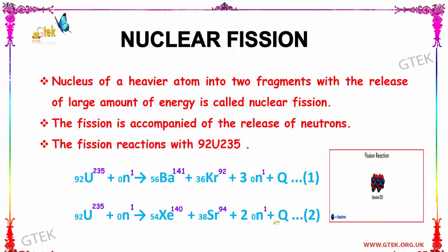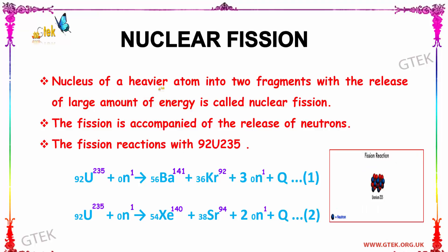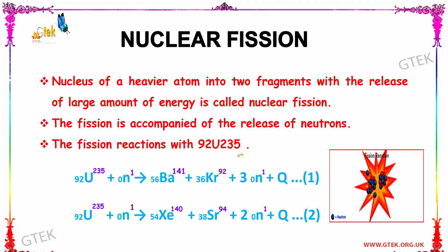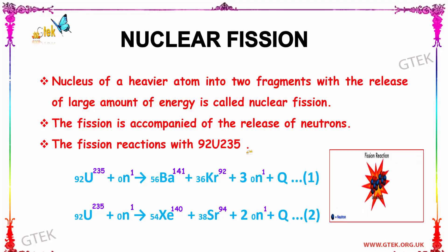Now let us see about nuclear fission. When the nucleus of a heavier atom gets split into two fragments with the release of a large amount of energy, it is called nuclear fission. The fission is accompanied by the release of neutrons. The fission reaction with uranium-235 is shown in the reaction below.